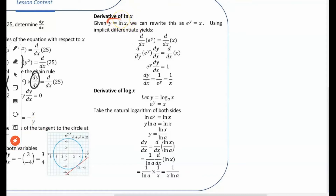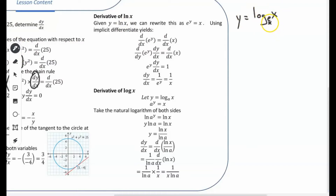Now we'll use implicit differentiation to find the derivative of the natural logarithm of x. Say we have y equals ln(x). Using logarithmic properties, since ln(x) is the log in base e, we can rewrite it: take e and make y an exponent, giving us e to the power of y equals x.